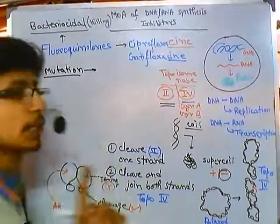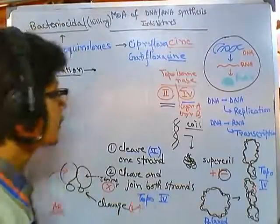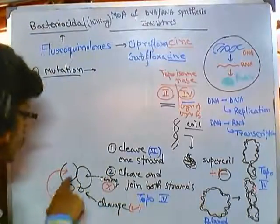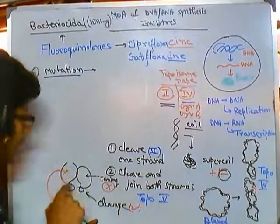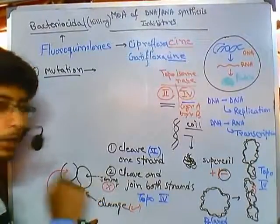Now, in this case, mutation is functioning as a blessing for bacteria. How? Let me draw. If this is the topoisomerase enzyme having two units—a unit for cleavage and a unit for joining, subunit for cleavage and subunit for joining.